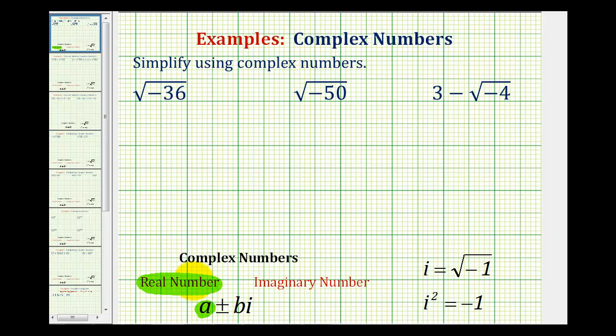And plus or minus bi is an imaginary number, where i is defined as the square root of negative 1, and i squared is equal to negative 1.